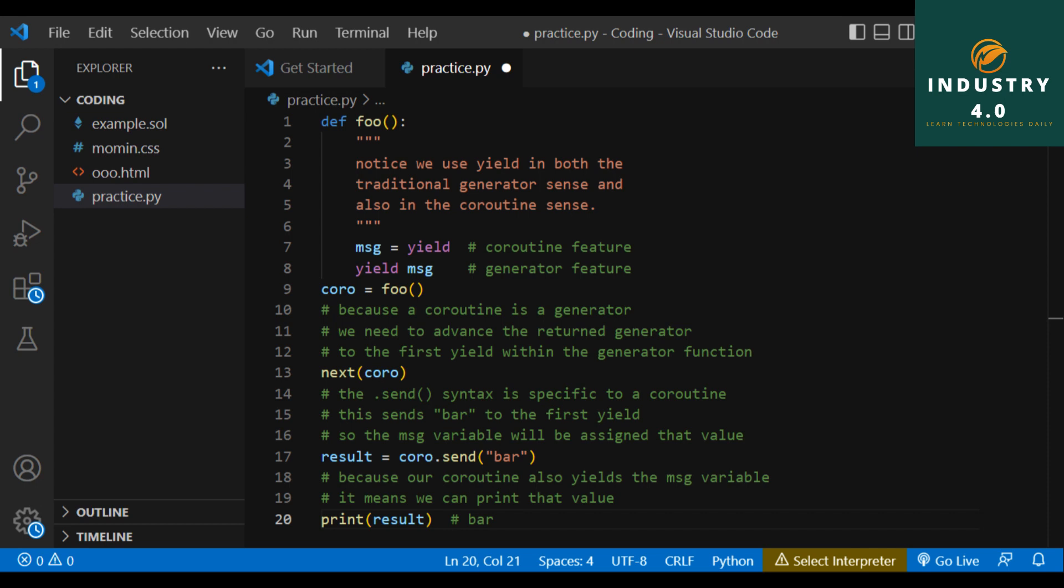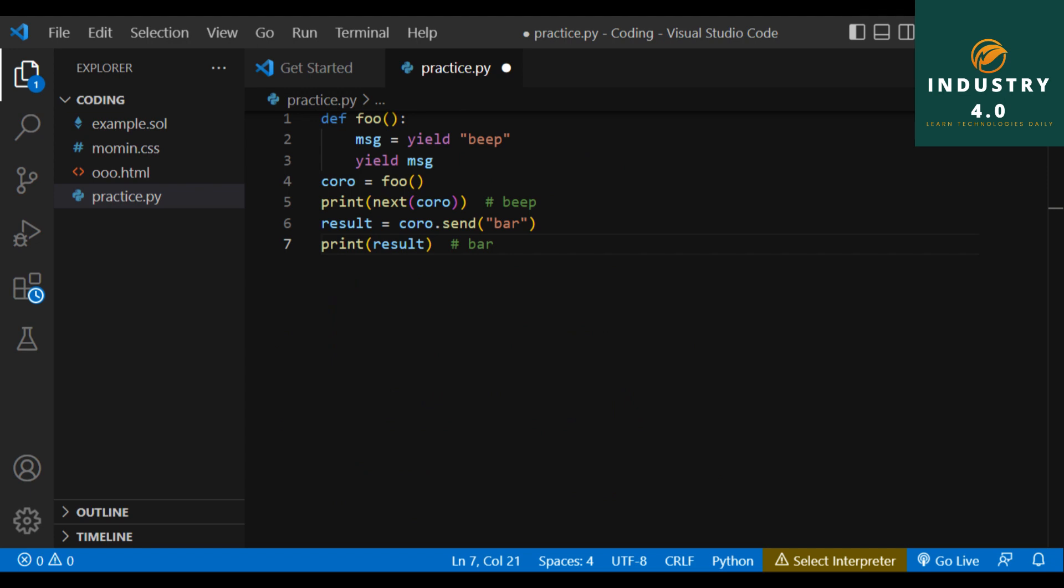Following is an example of a coroutine using yield to return a value to the caller that is previous to the value received through a caller using the .send() method. def foo(): msg = yield 'beep'. yield msg. coro = foo(). print(next(coro)) # beep. result = coro.send('bar'). print(result) # bar.